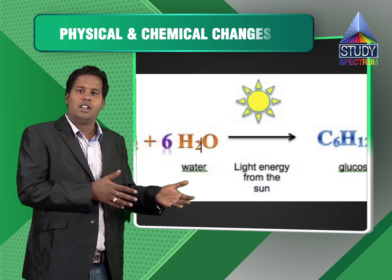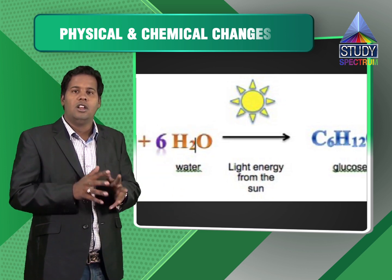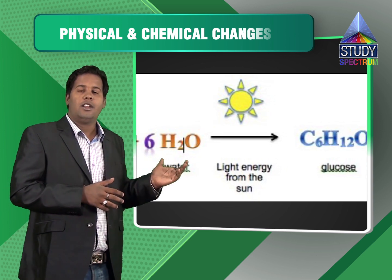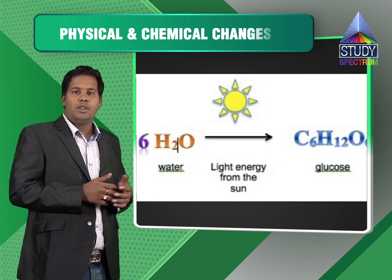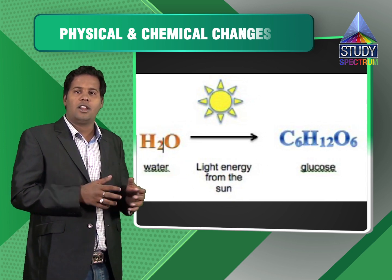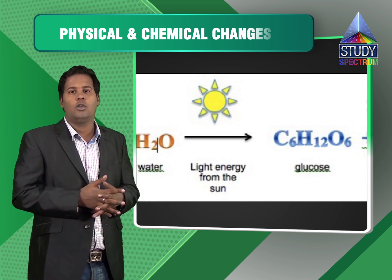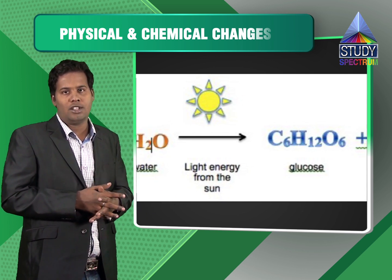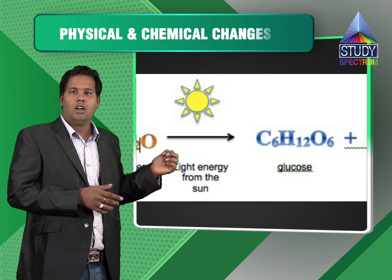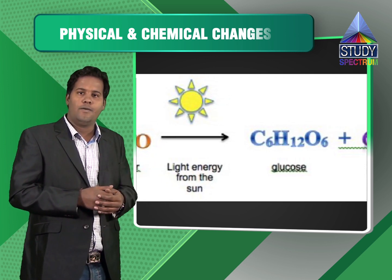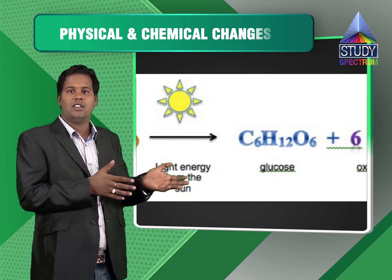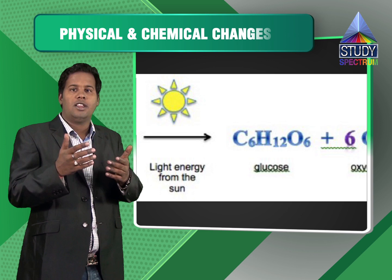What type of change is this — physical or chemical? Certainly this is a chemical change. Two reacting species — carbon dioxide and water — combine in the presence of sunlight to form glucose C6H12O6 and release oxygen. So the answer is: photosynthesis is a chemical change.